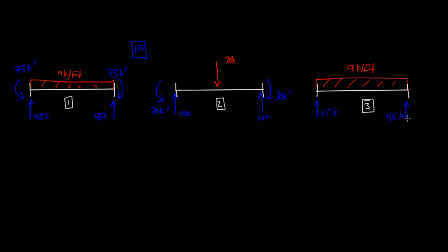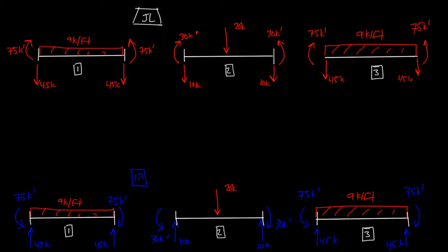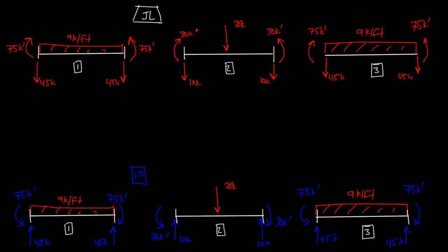For element 3, we also have a resisting moment of 75 kip-foot on the left and 75 kip-foot on the right. So this is the joint load diagram and the internal reaction diagram. In the next video, we're going to calculate the joint load matrix and the fixed member matrix. We use the joint load diagram to calculate the joint load matrix, and the internal reaction diagram to calculate the FM — the fixed member or fixed moment matrix. See you in that video.